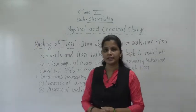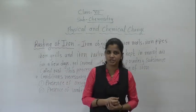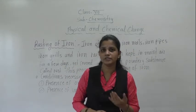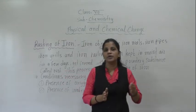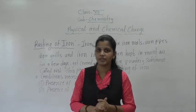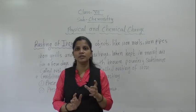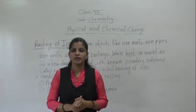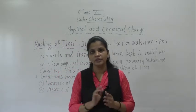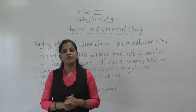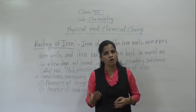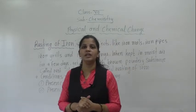Rusting of iron is also one example of chemical change. In this topic we will learn how the rusting of iron is caused — what is the process, how iron gets rusted. When iron comes in contact with air and water, a chemical reaction occurs, and whenever a chemical reaction occurs it means it is a chemical change.